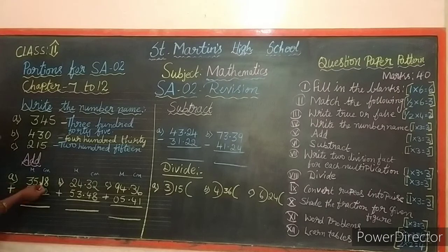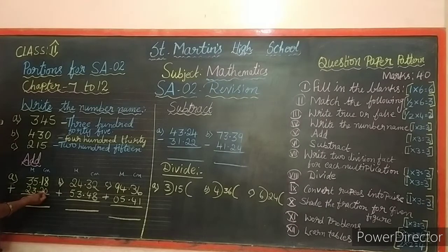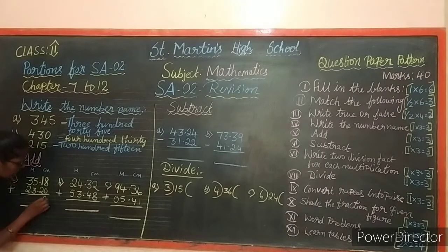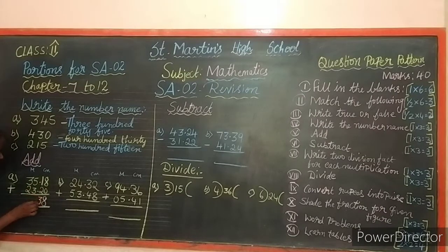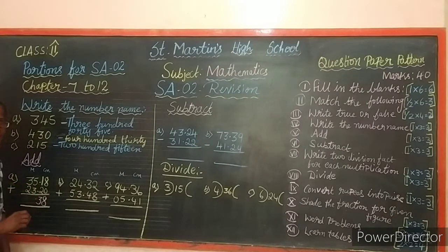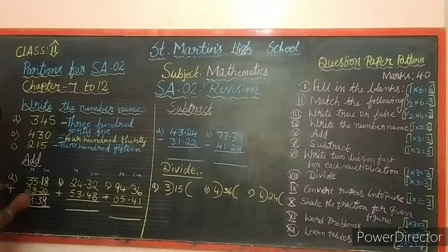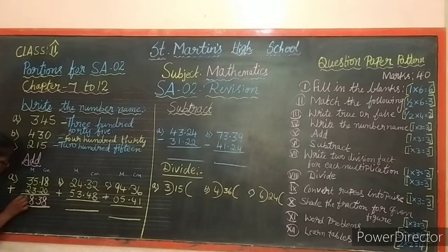In the centimeters ones place: 8 plus 0 equals 8. Then 1 plus 2 equals 3. Keep a full stop for the centimeter place. In the meters: 5 plus 3 equals 8, and 3 plus 2 equals 5. The answer is 58 meters 38 centimeters.